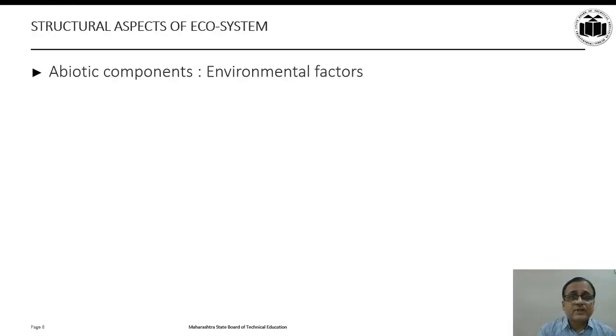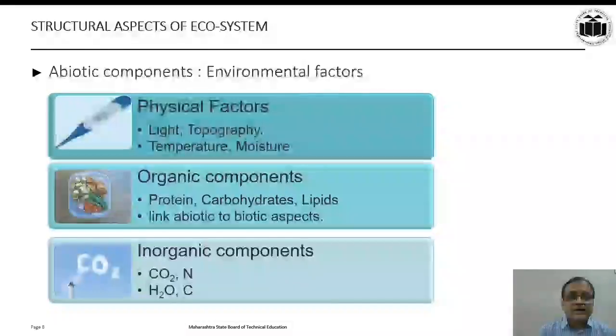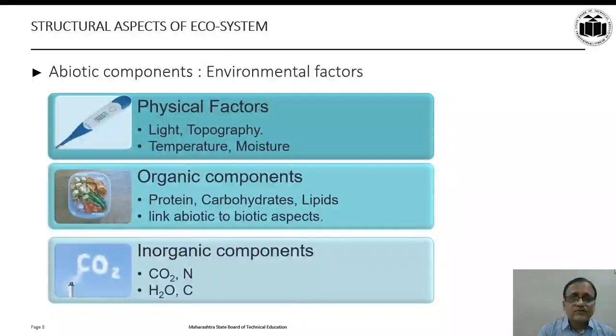The structural aspect of ecosystem consists of two components. First one is abiotic components and second one is biotic components. Abiotic components consist of environmental factors or climatic regimes. It consists of three components. First component is physical, related to physical factors like light, temperature, moisture, and topography of a given ecosystem.